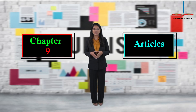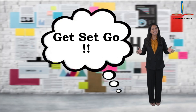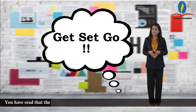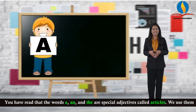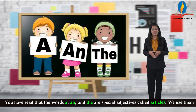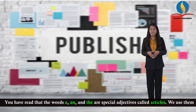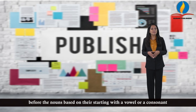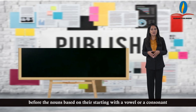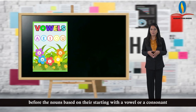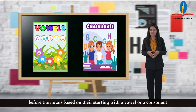Chapter 9: Articles - Get Set Go. You have read that the words a, an, and the are special adjectives called articles. We use them before nouns based on their starting with a vowel or consonant.